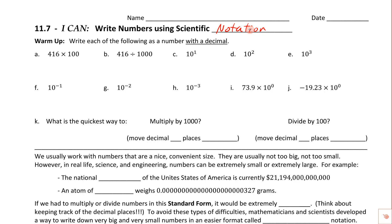So here's the warm-up. It says write each of the following as a number with a decimal. When you're done writing these answers, you have to put a decimal on there regardless of whether it's in front, in back, or in the middle of the numbers. When we're working with numbers and multiplying by powers of 10 — like 10, 100, 1000 — all we have to do is count how many zeros we've got. In this case, we've got two zeros, and because we're multiplying by 100 we're going to move the decimal two places.